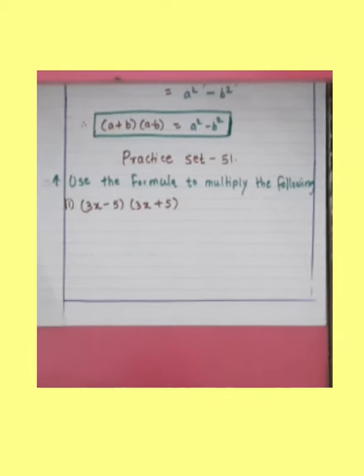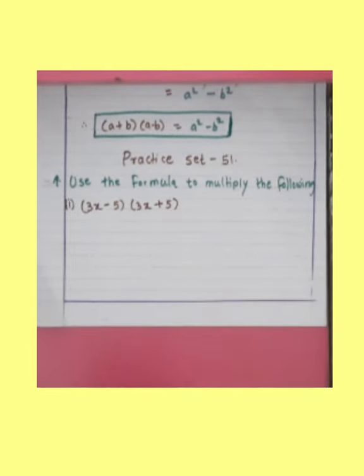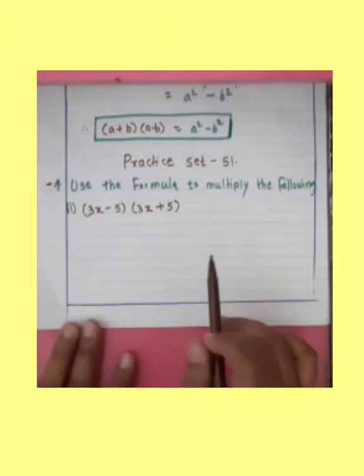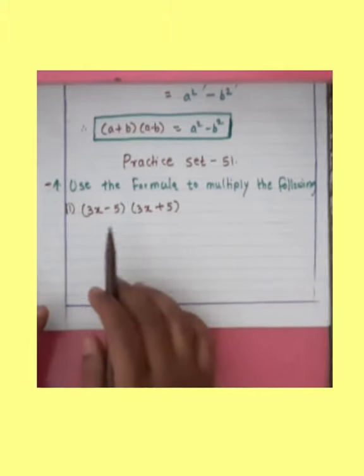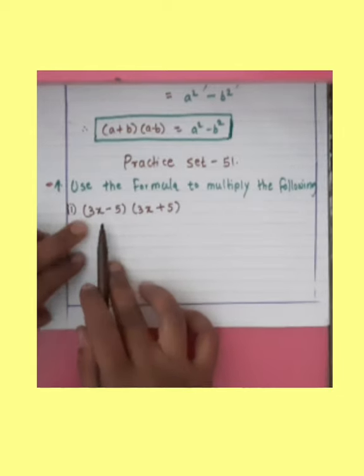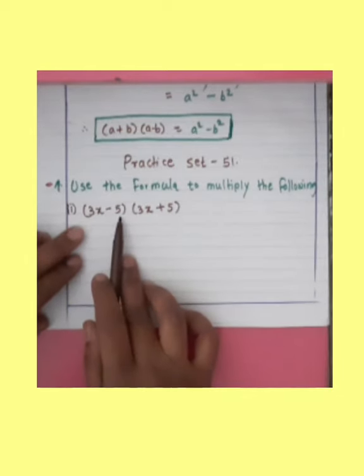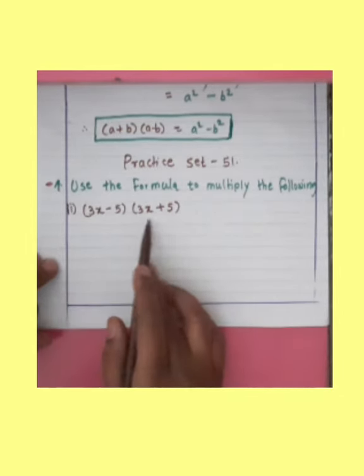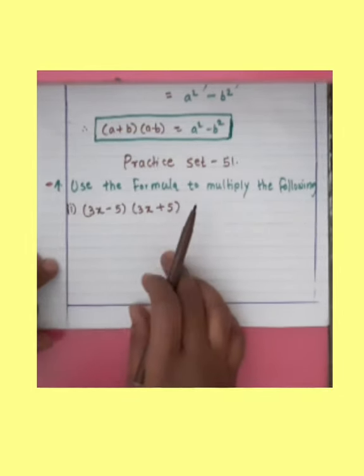Look at this, students — how to solve practice set 51. Use the formula to multiply the following. The second question: thrice X minus 5 multiplied by thrice X plus 5.